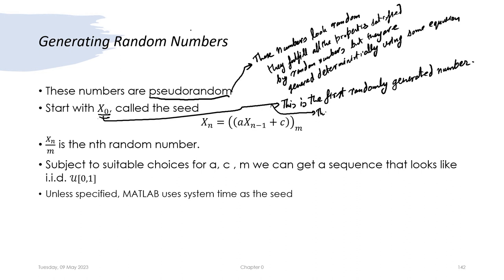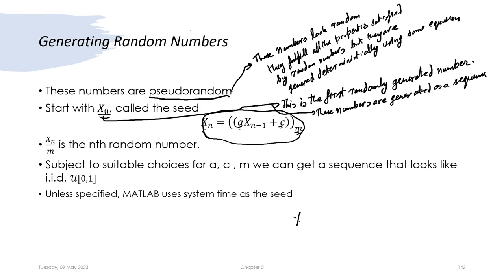The seed starts the sequence, and the nth random number is given by: x_n = (a * x_{n-1} + c) mod m, where a, c, and m are system-generated constants. x_n divided by m gives a value strictly between 0 and 1. Subject to suitable choices of a, c, and m, we can get a sequence that looks like iid U(0,1).